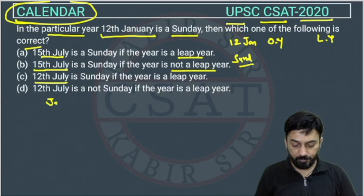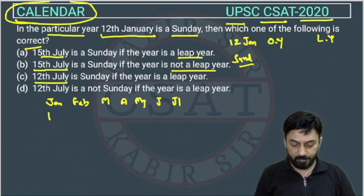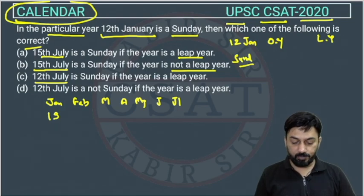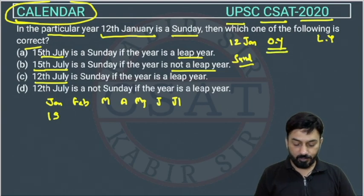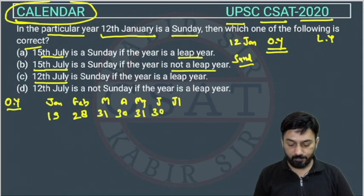We will write the months: January, February, March, April, May, June, July. In January, 12th January is known, so how many days are remaining? 19 days are remaining, because January has 31 days. In February, for an ordinary year, there will be 28 days. March has 31, April has 30, May has 31, June has 30, and for July we are computing up to 12th July, so 12 days.